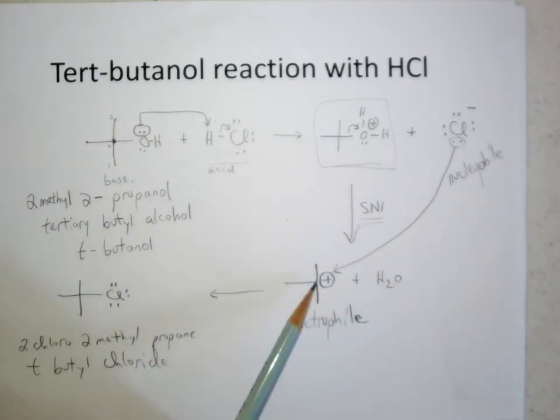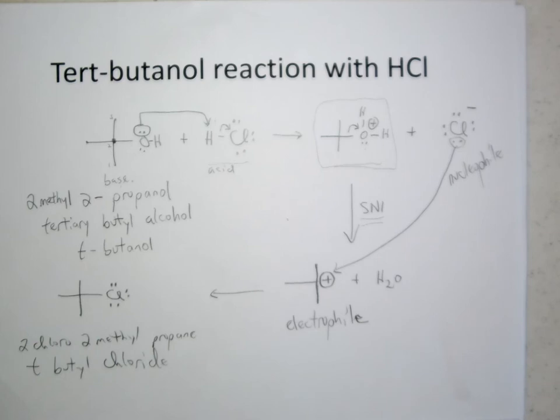And then the nucleophile can trap the carbocation and give us product. So a nice, relatively straightforward three-step reaction, protonation of the alcohol, removal of the leaving group, and then trapping of the carbocation with the chloride to form the final product. So super nice, not too difficult.